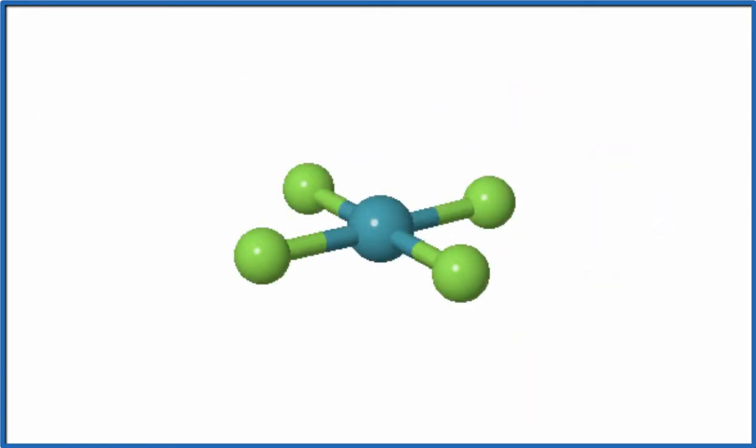So here is the XeF4 molecule. We have the green, these are the fluorine atoms, and then the xenon, that's the blue in the center. We also have a lone pair of electrons on top and on bottom of the atom.